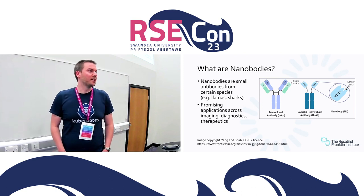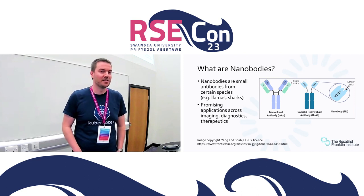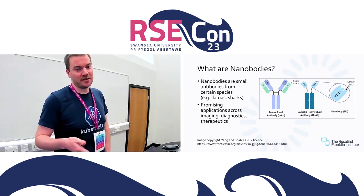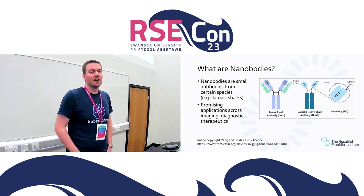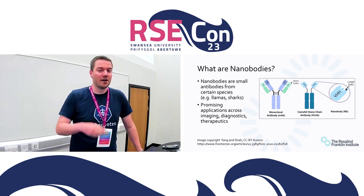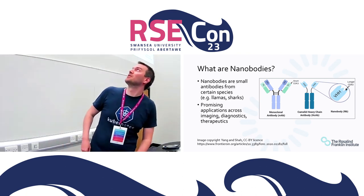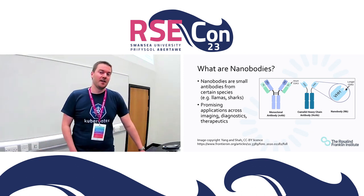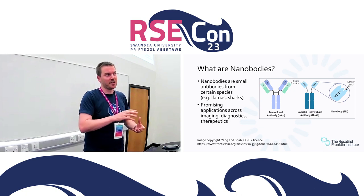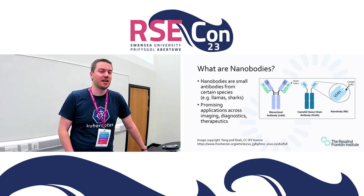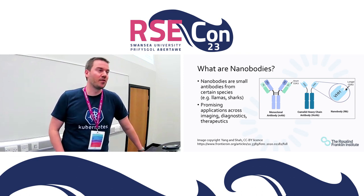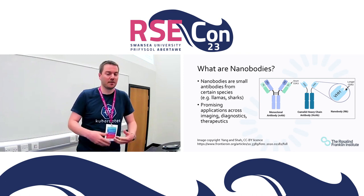Nanobodies are small antibodies that come from certain species — members of the camel family including llamas and alpacas, and also, interestingly, from sharks. Antibodies from a person, like a monoclonal antibody, have multiple active sites and are relatively large molecules. Whereas in llamas, you only have this one VHH site — the active part of the nanobody that binds some antigen target. It's much smaller and simpler, making it easier to work with and cheaper to produce, with promising applications across imaging, diagnostics, therapeutics, and drug development.